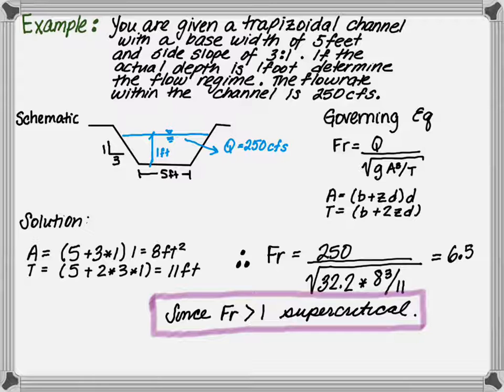In this example, if the Froude number was less than 1, we would define this as a subcritical channel.